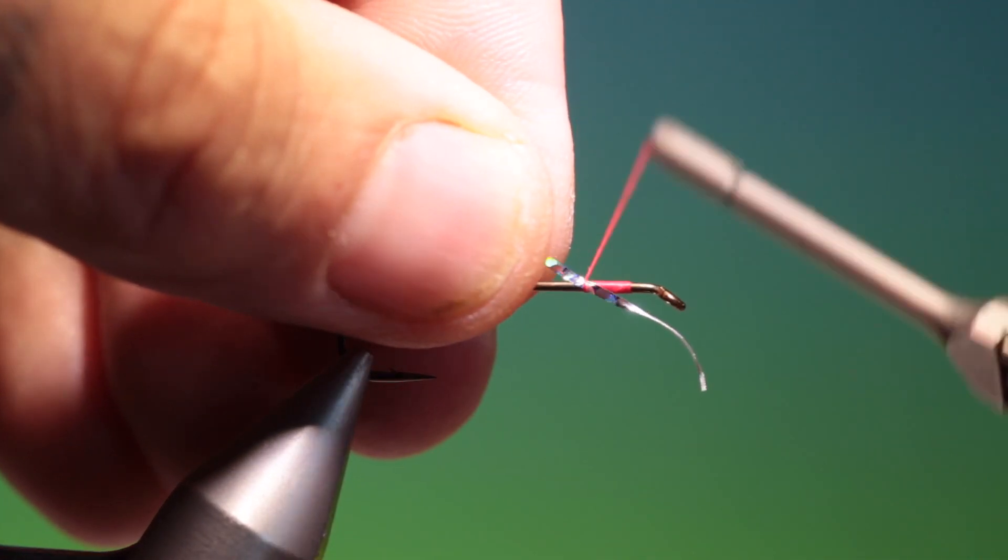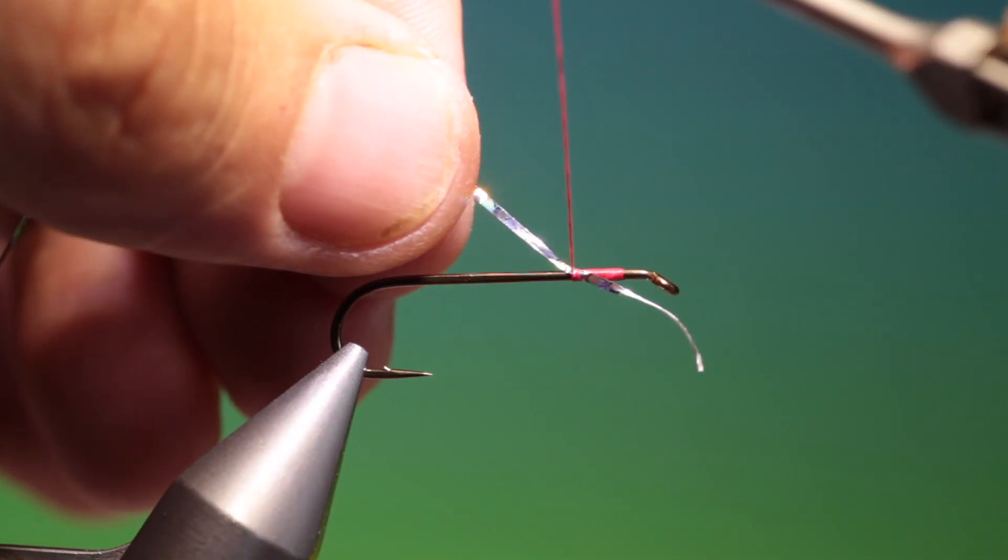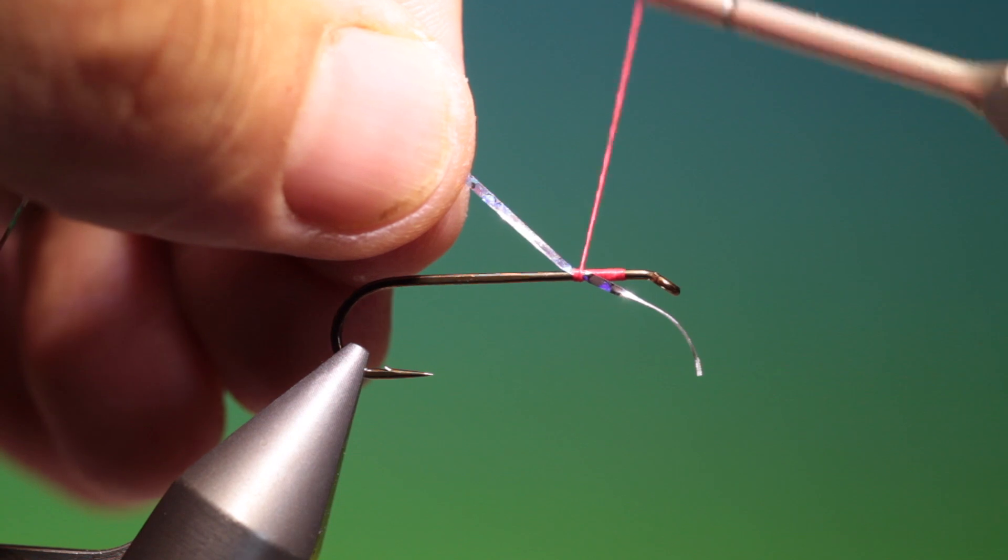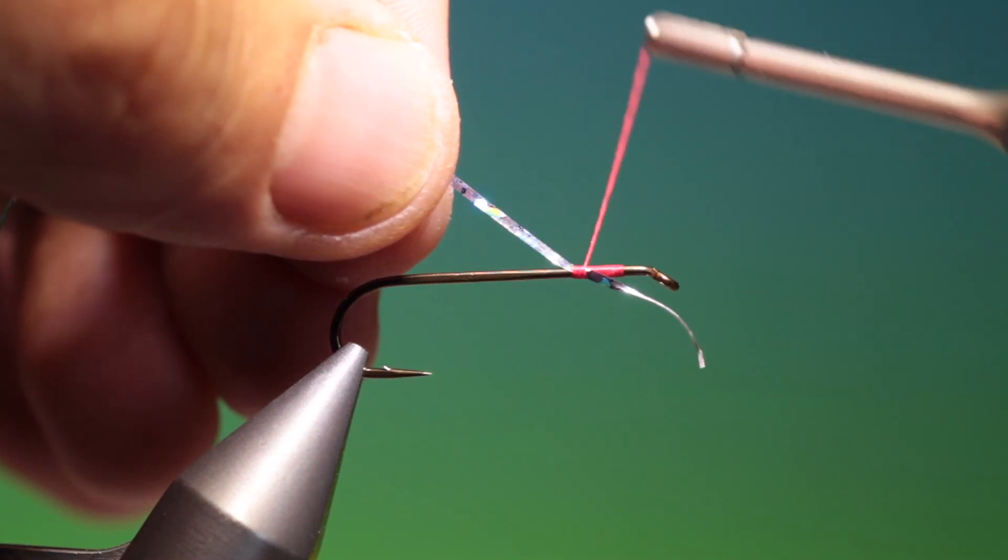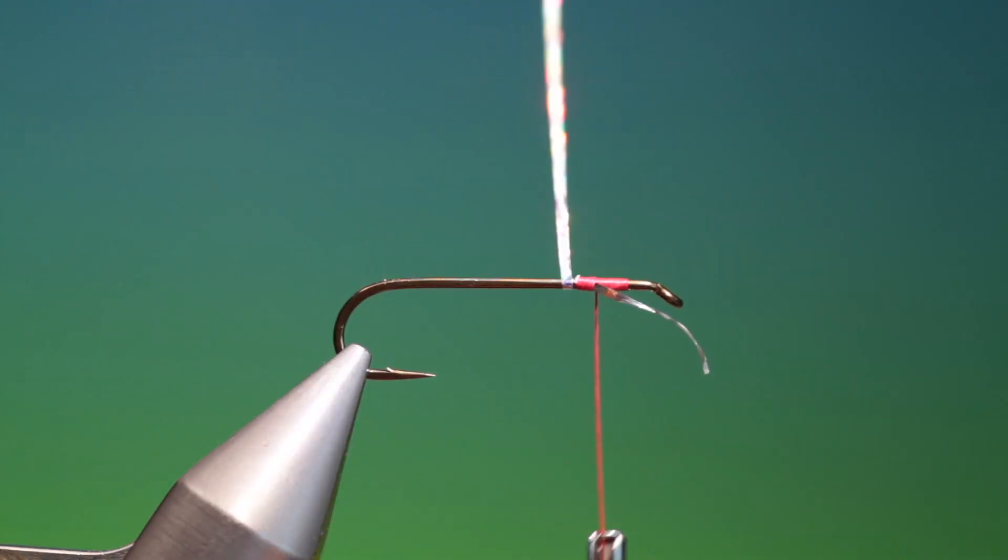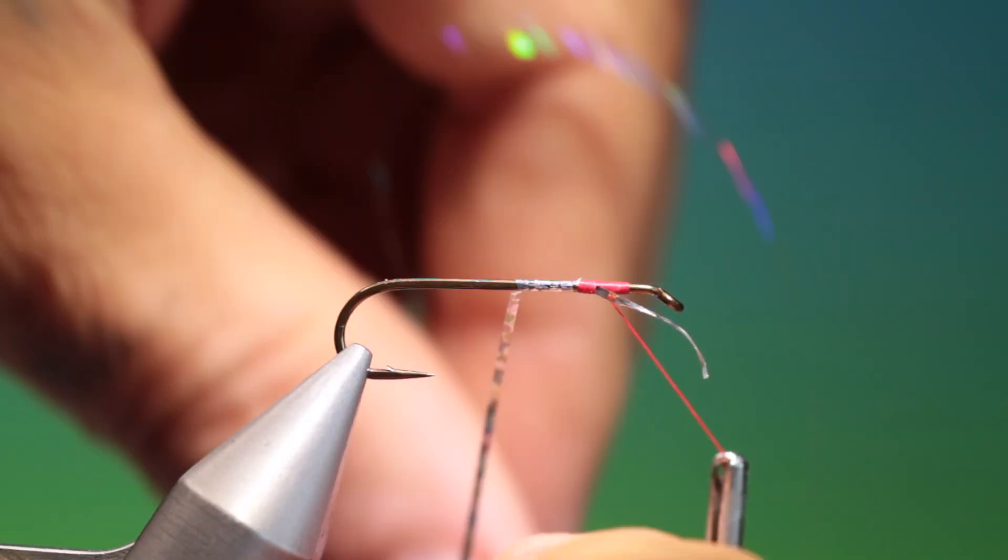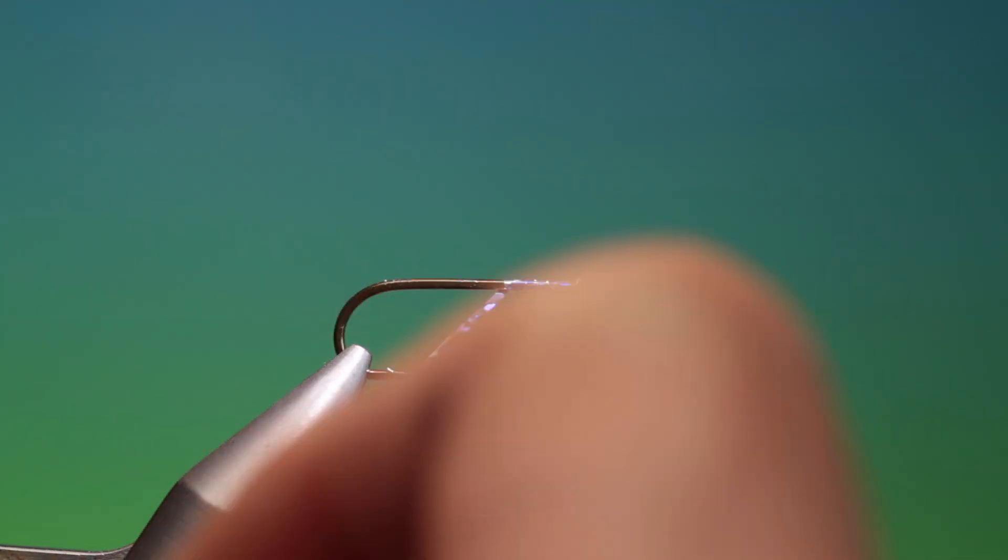So we'll just tuck this in here, leave enough here so you can easily trim it off afterwards. And we go back over the red a little ways and we can wrap this over the whole body. This is just to give the underbody a silver flashy effect.